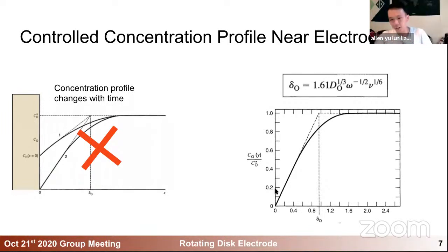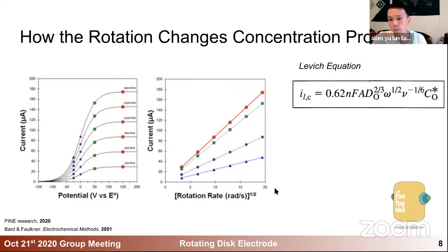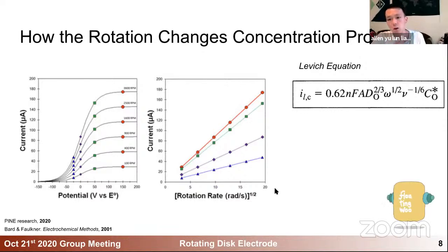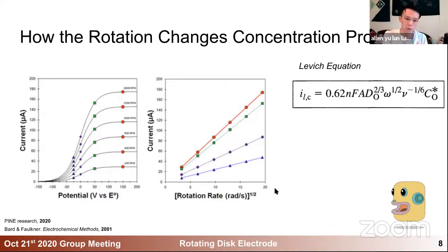It's actually not that simple. Let's look at what happens if we apply a constant voltage at different rotating speeds. The Levich equation basically determines what the limiting current is, based on the diffusion of your active species, the concentration in the bulk, and the rotating speed of your electrode. As you can imagine, the faster you rotate, the faster the active species migrates from the bulk electrolyte to near the electrode surface, and so the limiting current will be larger.